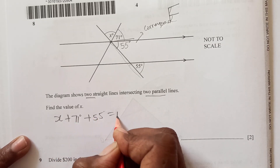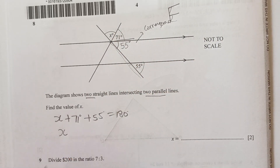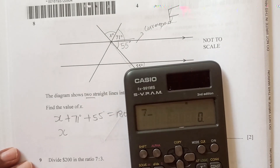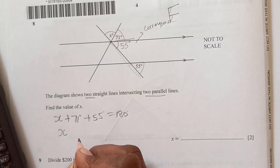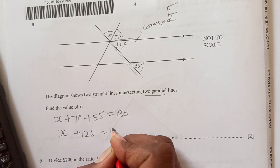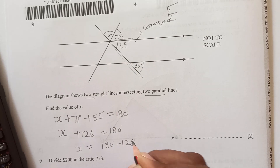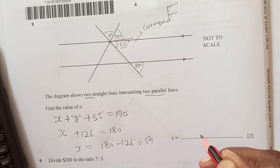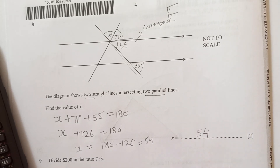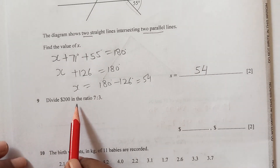So x + 71 + 55 = 180. That gives x + 126 = 180, so x = 180 − 126 = 54. Our value of x is 54.